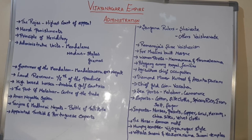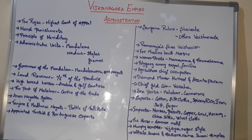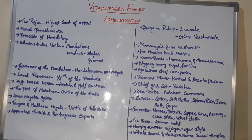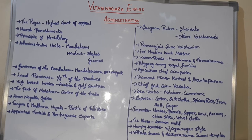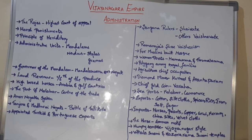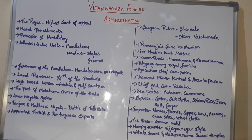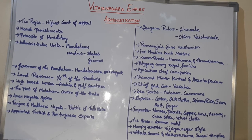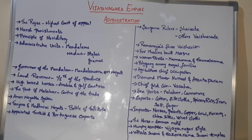Nayaks were responsible for expanding agricultural activities in their particular Aram and collected taxes. With this income, they maintained their army, horses, elephants, and weapons of warfare to supply to the king. That is why they paid taxes as man or money — man meaning soldiers.